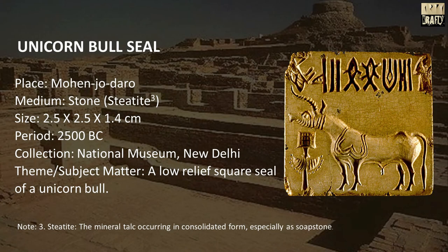Unicorn Bull Seal. Place: Mohenjodaro. Medium: Stone steatite. Size: 2.5 x 2.5 x 1.4 centimeters. Period: 2500 BC. Theme or subject matter: a low relief square seal of a unicorn bull.